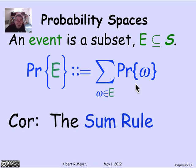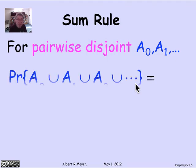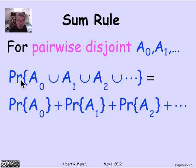As an immediate corollary of this definition, we get something central to probability theory called the sum rule. It says that if you have a bunch of events that are pairwise disjoint — so there's no outcome in common to A0 and A1, A1 and A2, and so on — then the probability of the union of the A's is simply the sum of the individual probabilities. This is a rule we'll use all the time: break things up into separate cases, handle each A0, A1 separately, and add up the probabilities.